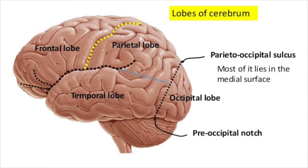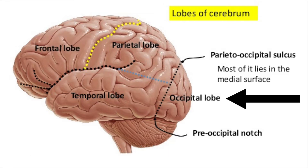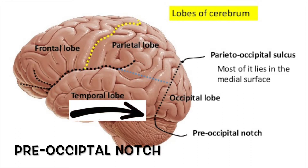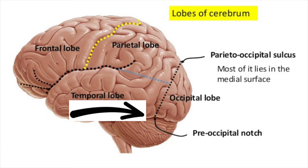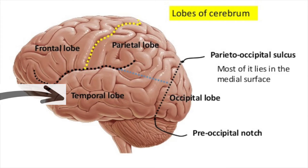Moving on to the parietal-occipital sulcus, which divides your parietal and occipital lobe. And finally, if you draw an imaginary line between the pre-occipital notch — an indentation about five centimeters in front of the occipital pole — to the parietal-occipital sulcus, it will delineate the occipital and the temporal lobe.